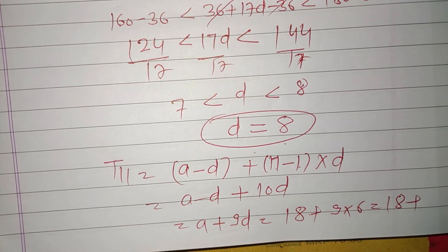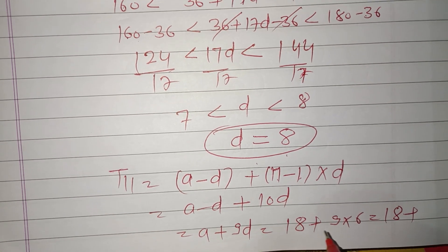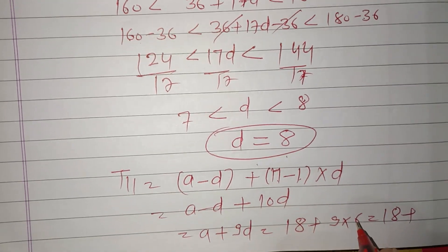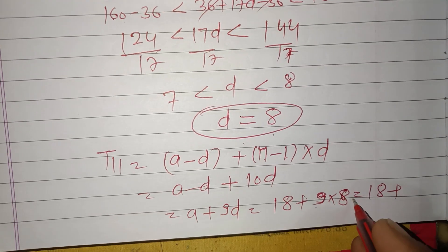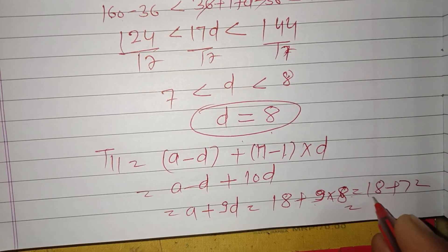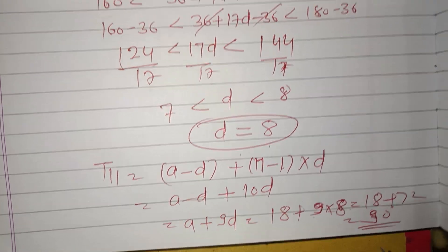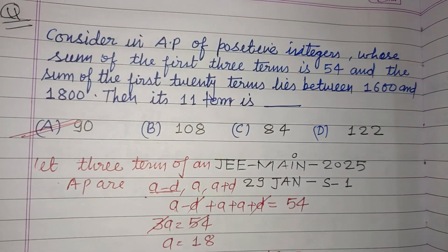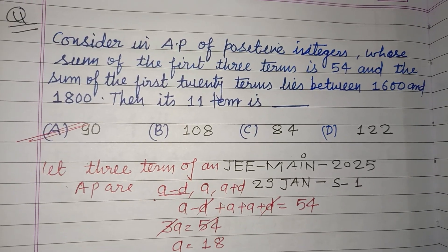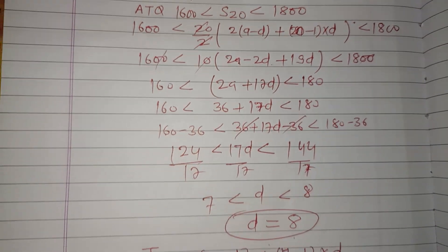18 plus D is 8. 9 into 8 is 72. 72 plus 18 that is 90. So 90 is the correct answer which is given in option A. So option A is correct. I hope you got it. Please like the video, subscribe the channel. Thanks for watching.